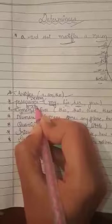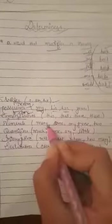Next one is demonstratives. Demonstratives are those which are used to show anything, which are used to show any noun. For example this, that, these and those. These are demonstratives.